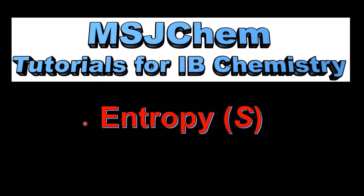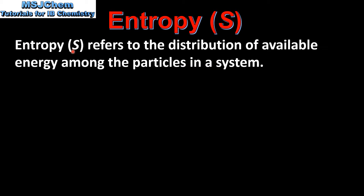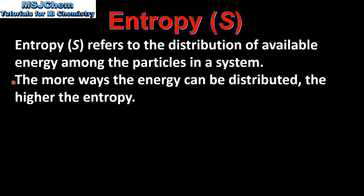This is MSJChem. In this video I'll be looking at entropy. Entropy, which is given the symbol S, refers to the distribution of available energy among the particles in a system. The more ways the energy can be distributed, the higher the entropy.